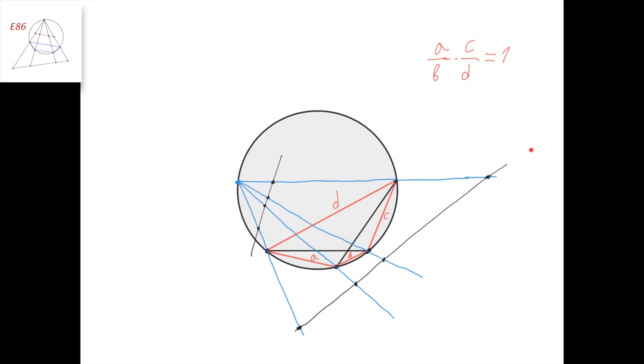And if we intersect it here with another line, then these four points are also in harmonic division. Because we know that this sine divided by this sine times this sine divided by this sine equals 1.